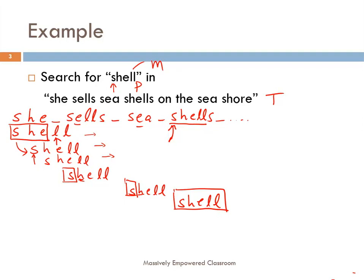Each of the M characters of the pattern must be matched to the corresponding M characters of the text, until either everything matches or you find a mismatch. For example, in the first position we made three comparisons — S, H, and E — and the fourth comparison found a mismatch. In other cases, a single comparison gave a mismatch. Finally, at the matching position all five comparisons were successful. As we do the analysis, it is important to remember that at each position in the text, we may do up to M comparisons, because the pattern is of length M.